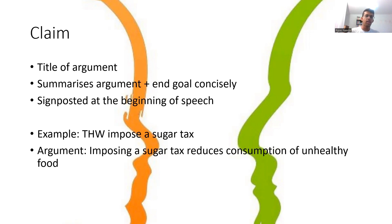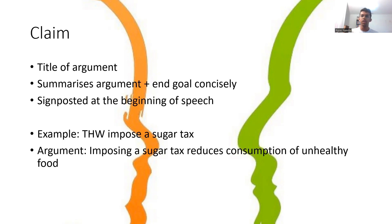As for the claim, this is the title of the argument. If you just said the claim by itself, someone should be able to understand what the argument is. So the claim might be something like 'the car industry is going to benefit economically.' Everything around that supports your initial claim. This is just a very short summary of your argument and should be quite concise. Within your speech, a singular claim should appear twice — first, when you signpost it at the start of your speech, where you should be saying the claim of each of your arguments.